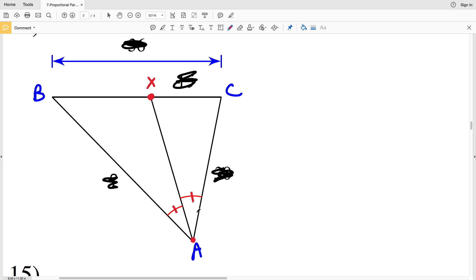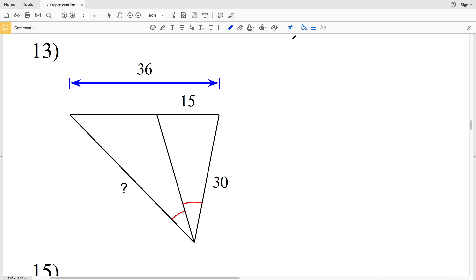Since AX is the bisector and X is on BC, then the theorem says that AB over AC (this length of AB over this length of AC) is going to be equal or proportional to the length BX over this length CX. So again, AB over AC is proportional to BX over CX.